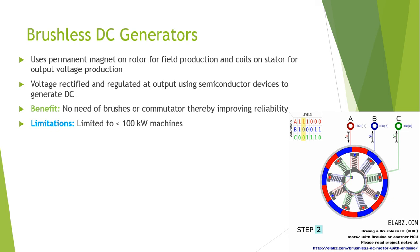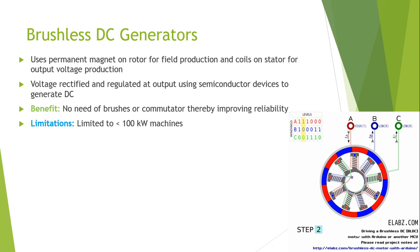The soft brush material — basically made up of carbon — wears down due to friction, creating dust. Eventually the brushes have to be replaced, making commutator motors unsuitable for particulate or sealed applications and for applications that require maintenance-free operation.